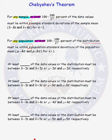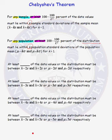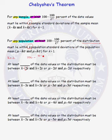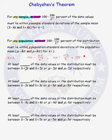Let's fill in the following blank: at least blank of the data values or the distribution must be within two standard deviations of the mean. In this problem, k equals 2, so we need to figure out what 100 minus 100 over k squared is. That's 100 minus 100 over 4, which equals 75. So at least 75 percent of the data values or the distribution must lie within two standard deviations of the mean.